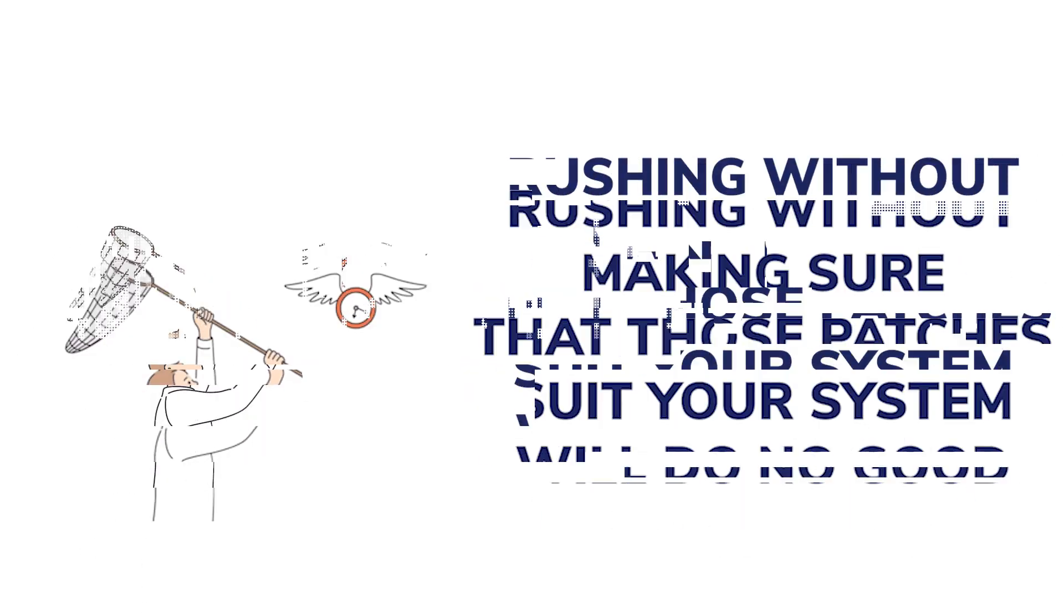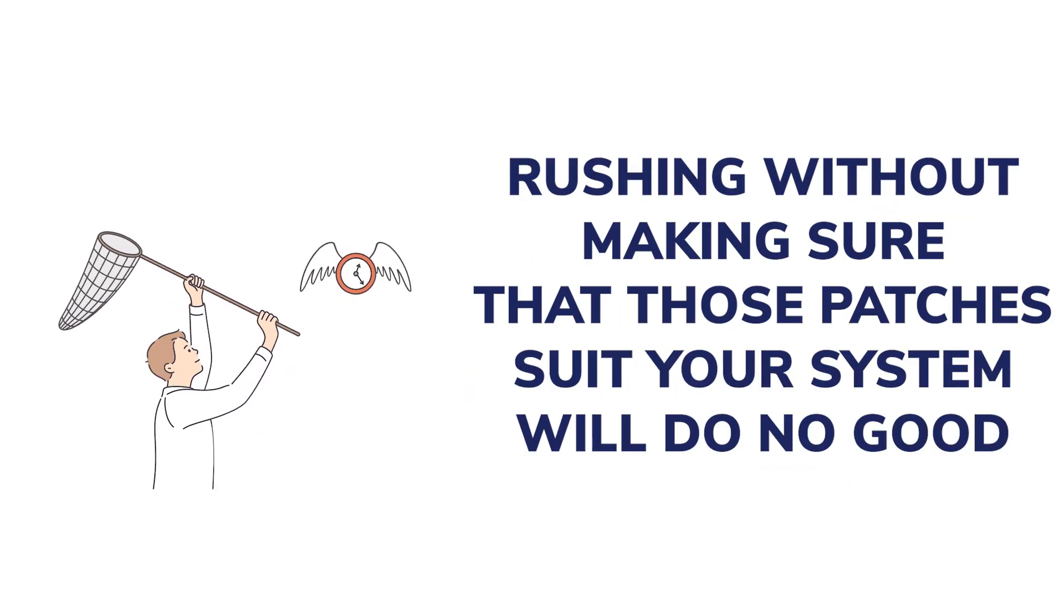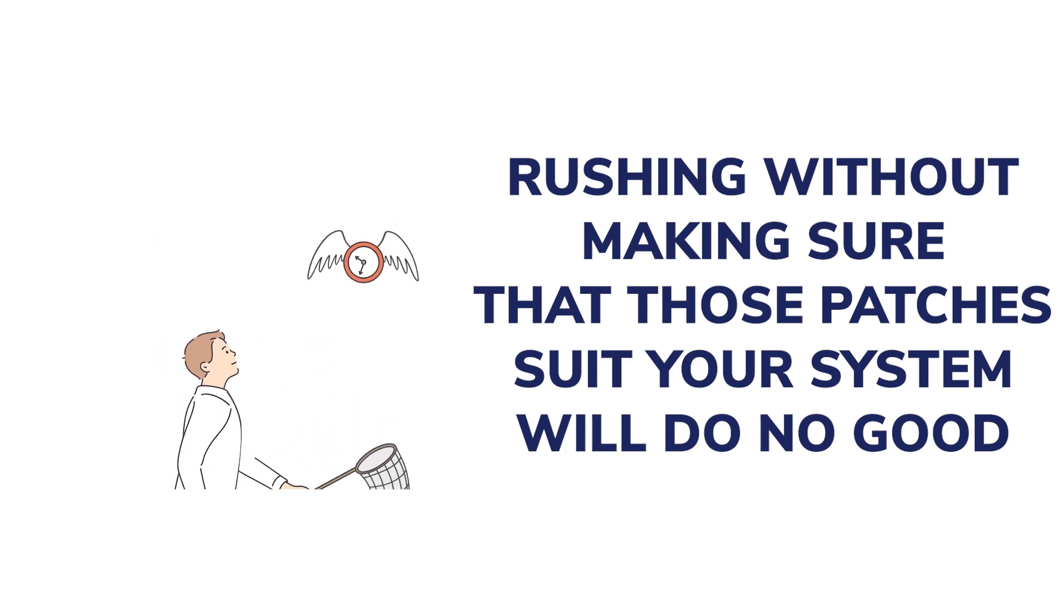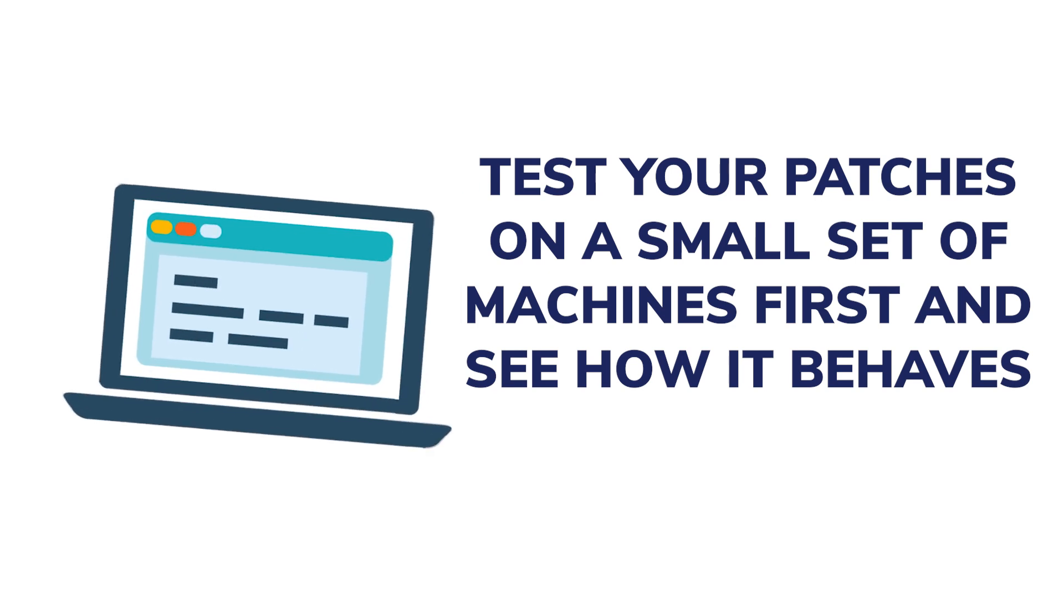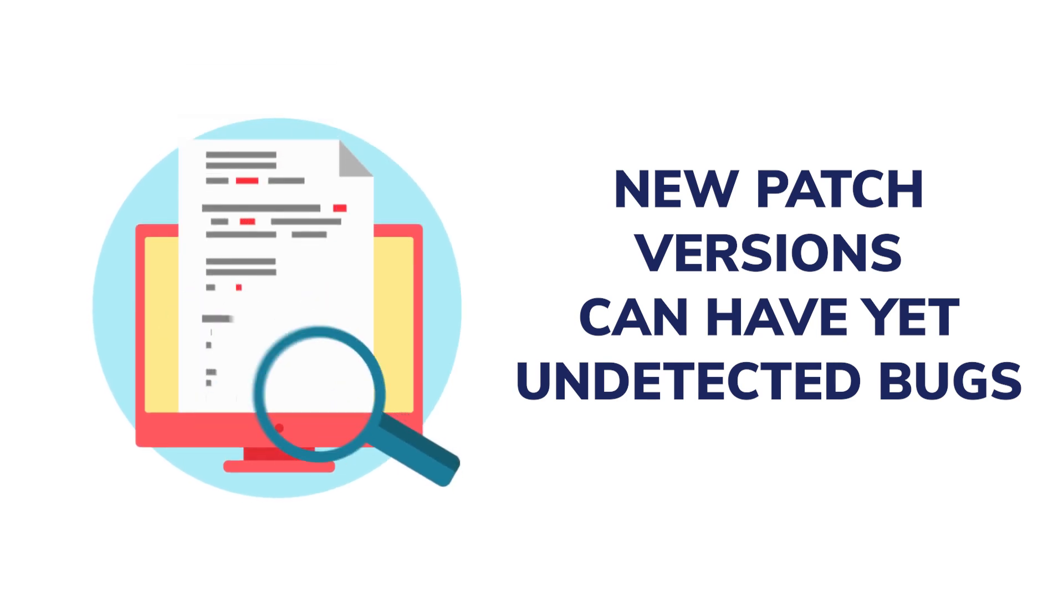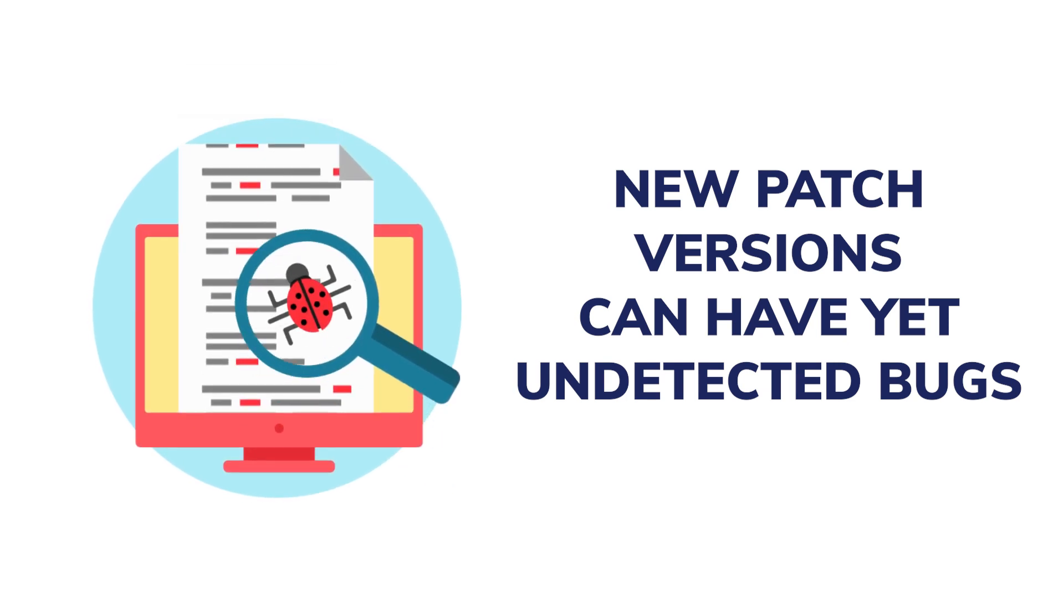Test on a small sample before wide deployment. It's true that software patches should be implemented in a timely manner, but rushing without making sure those patches suit your system will do no good. The testing part is an important patch management best practice. Patch validity depends on the vendor himself. Therefore, you need to make sure you test your patches on a small set of machines first and see how it behaves. If everything goes well, then you can apply them overall. New patch versions can have yet undetected bugs. This way, you will avoid damage to certain machine configurations.